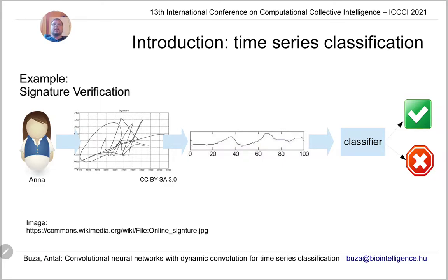I will explain time series classification using an example from the domain of signature verification. In this example, we assume there is a system and a user called Anna who has legitimate access to this system. Whenever Anna tries to log in, she is supposed to write her signature on a touch screen, for example on a tablet. While she writes her signature, some properties of the writing may be observed — for example, we may obtain the speed as a function of time.